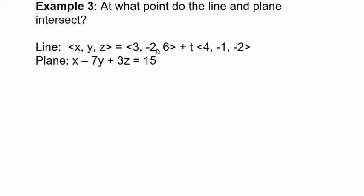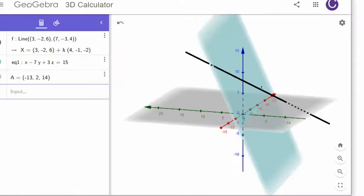This line is given as a vector valued function and this plane is just given in terms of x, y, and z, not in vector form. So let's first take a look at what the graph of this looks like. We have the line containing these two points and the plane here.